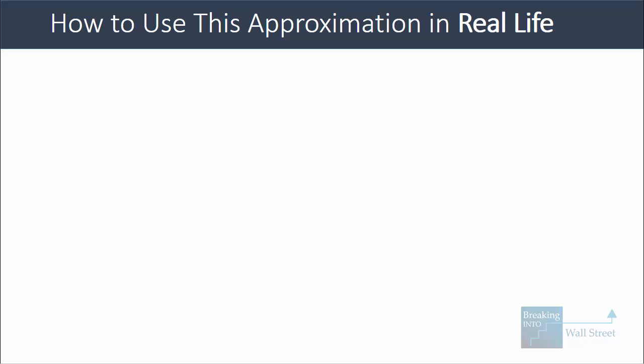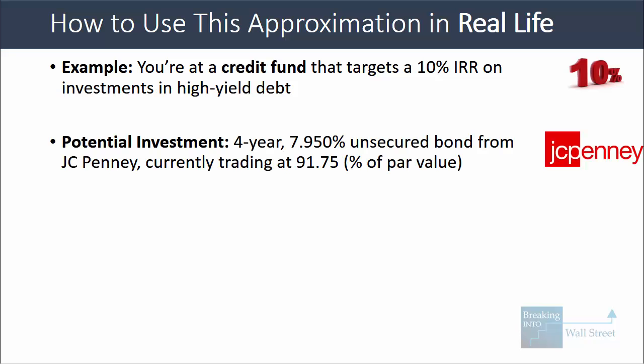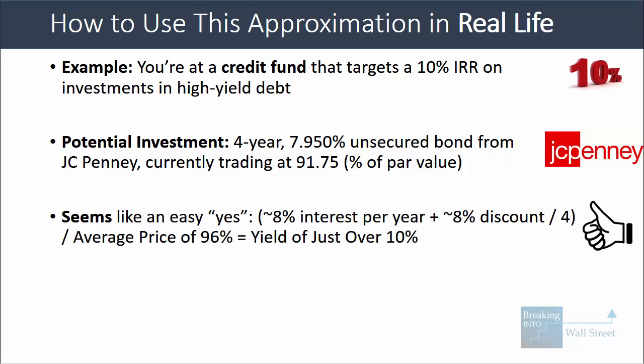Let's look at how to use this approximation in real life. Say you're at a credit fund that targets a 10% IRR on investments in high yield debt, and you're looking at a potential investment in JCPenney. The company has a four-year, 7.95% unsecured bond trading at about 91–92% of par value. If you just do the quick math: roughly 8% interest per year, plus an 8% discount divided by 4 years equals about 2% per year, giving us around 10% total.